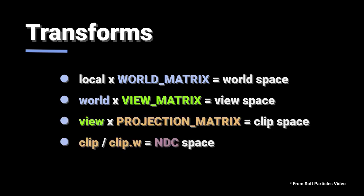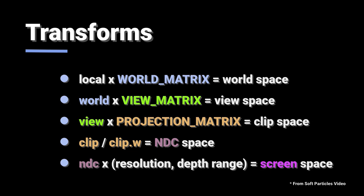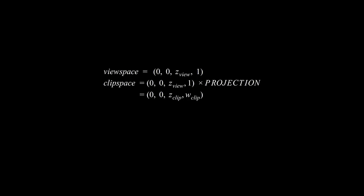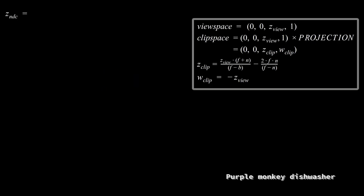The perspective w-divide here makes the transformation non-linear, and since w is actually the view depth, the final depth value is directly related to 1 over z. I did the whole derivation in that video.